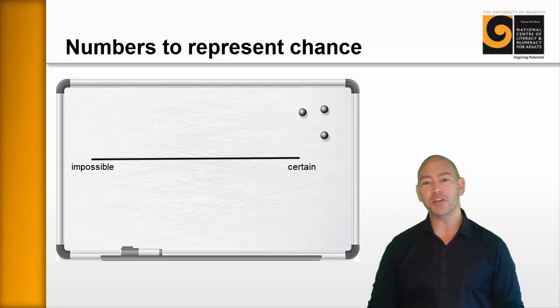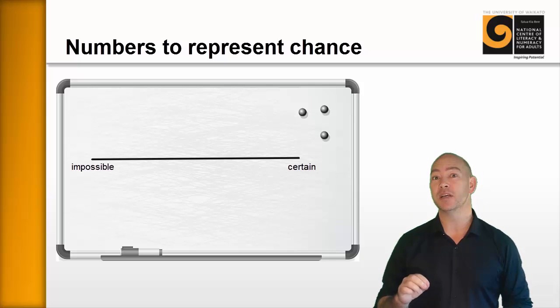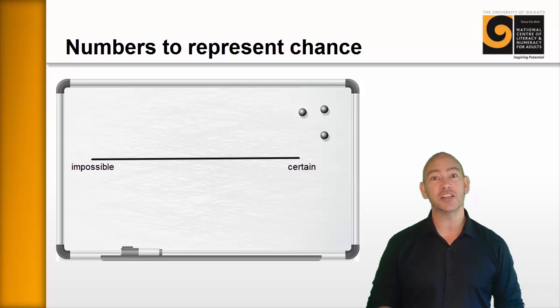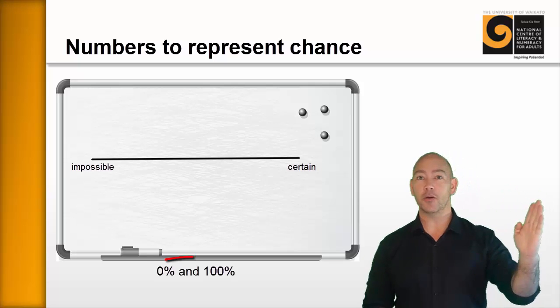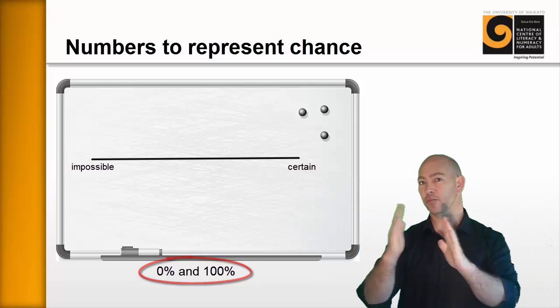Number two, describe to the learners that the chance of something happening can be described in a couple of different ways. But it's usually described as a 0% chance or 100% chance and somewhere in between.